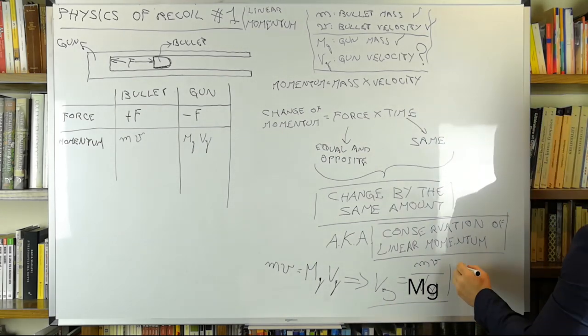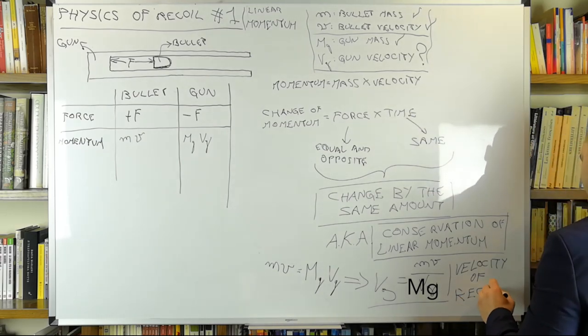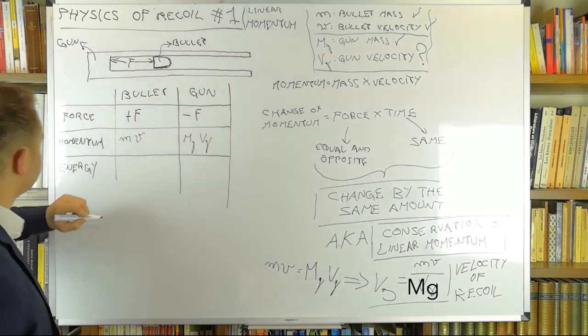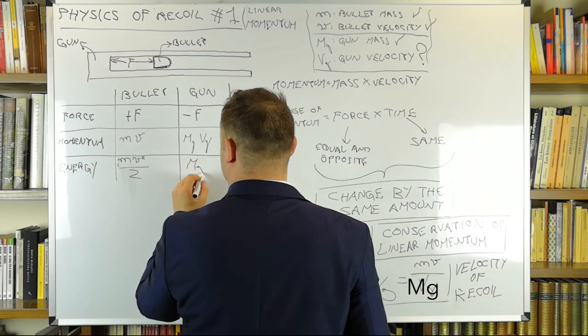Anyway, in regard to the momentum, the gun gets exactly the same amount as the bullet. Luckily though, it is not the momentum that causes damage, but the kinetic energy, which is calculated with this simple relation. Half the mass times the velocity squared, both for the bullet and the gun.